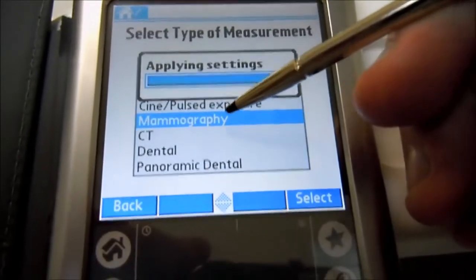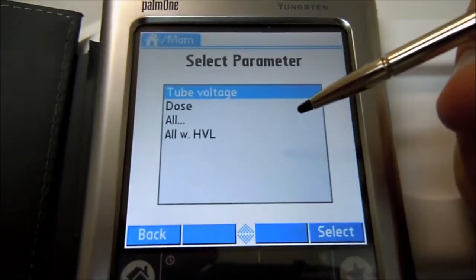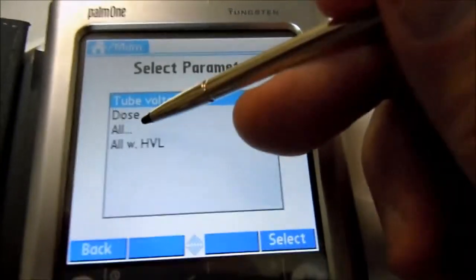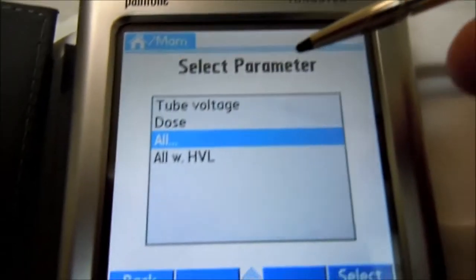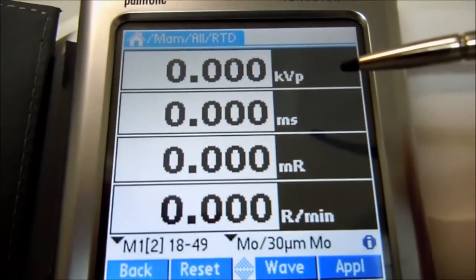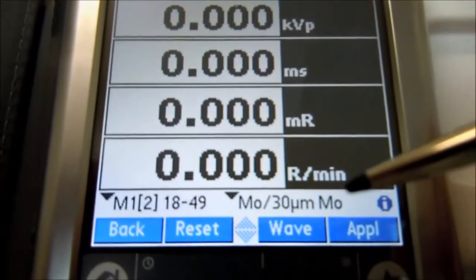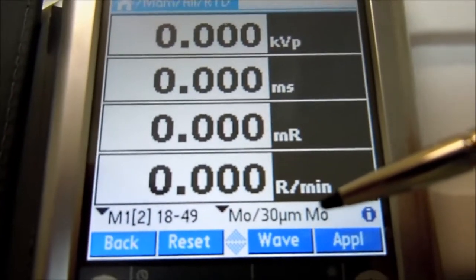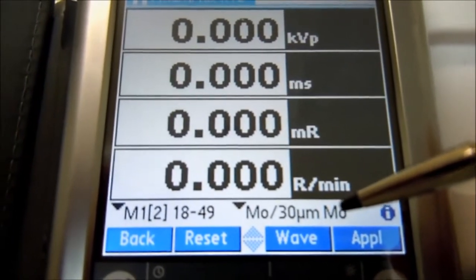I'm going to select MAMO, select All, and we're looking for the KV. Make sure we have the right filtration set up. Right now it's in Lavinium, we want to set it to RH.